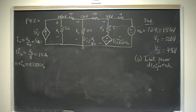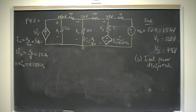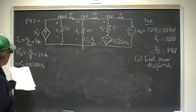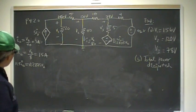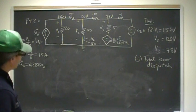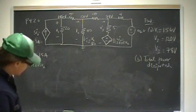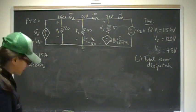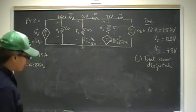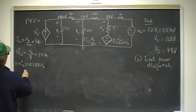5I₀ is 120 over 8, which gives me 15 amps. And 11.5 times I₀ is 3 times 11.5, which gives me 34.5 volts. So we have all these values and can go ahead and find the power dissipated.